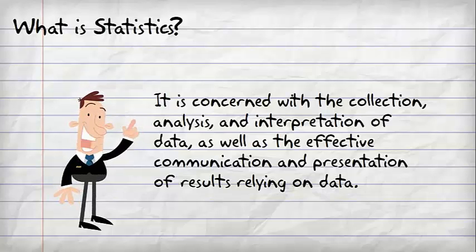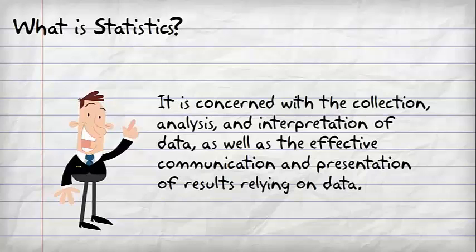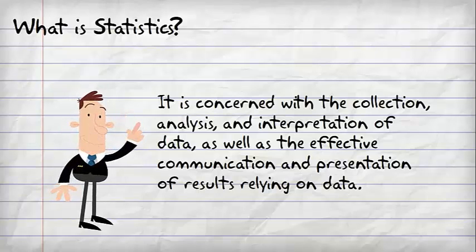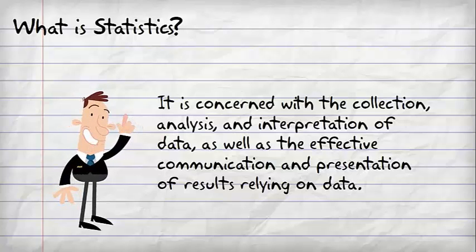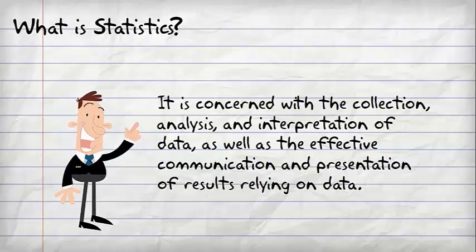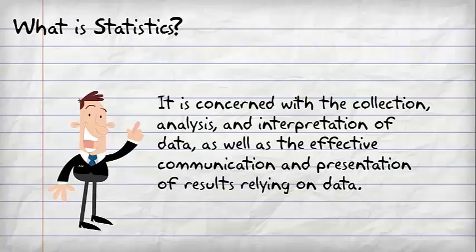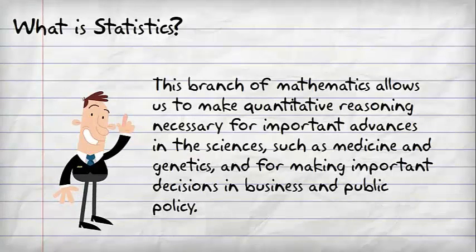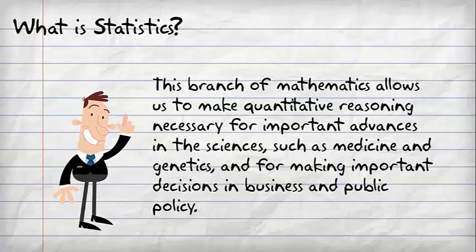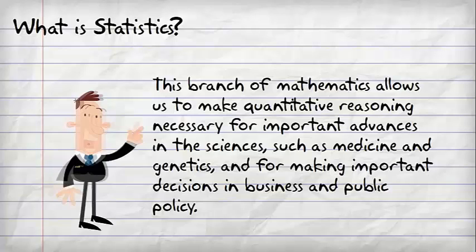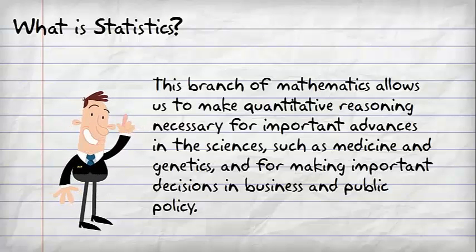We're going to break this course down into each one of these phases. Probably one of the hardest things to do is collecting data that's good and representative of what we want to study. Once we make a good collection of data, we analyze it, and after the analysis we interpret it to make decisions. Statistics is used in several fields and is a branch of mathematics that allows us to make quantitative reasoning necessary for advances in medicine, genetics, business, and public policy.